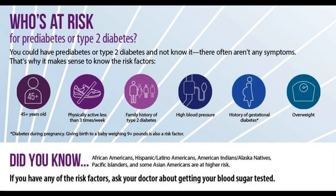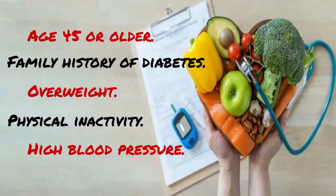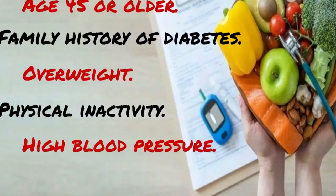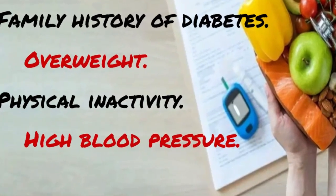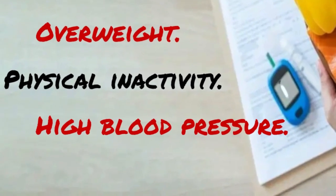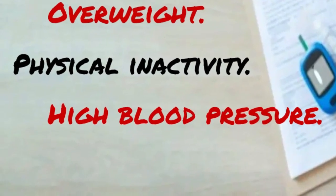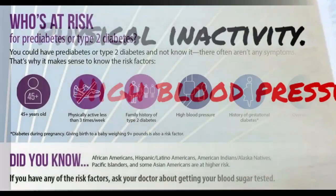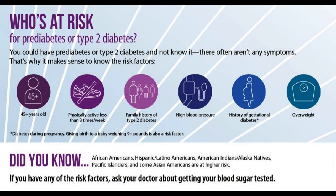Who is more likely to develop type 2 diabetes? You are more likely to develop type 2 diabetes if you are age 45 or older, have a family history of diabetes, are overweight, are physically inactive, or of certain race. Certain health problems such as high blood pressure also affect your chance of developing type 2 diabetes. You are also more likely to develop type 2 diabetes if you have prediabetes or had gestational diabetes when you were pregnant.